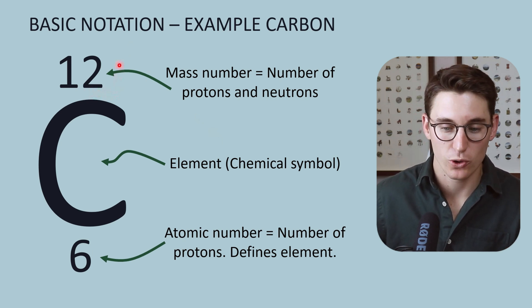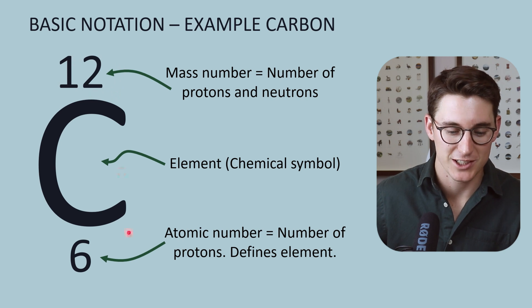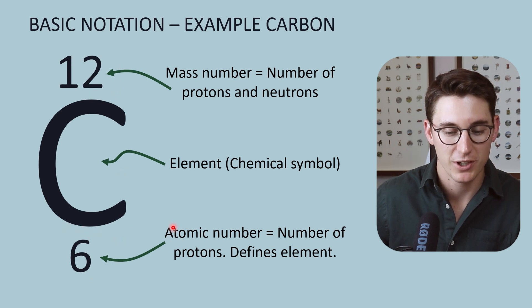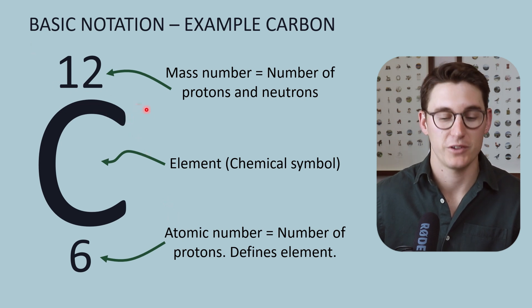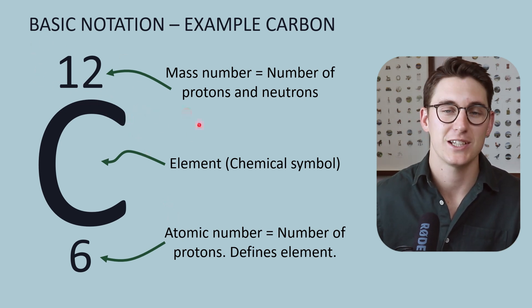If we were to change the total number of neutrons in the nucleus but kept the protons the same, it would still be called carbon, but it would no longer be carbon-12. If we were to add a neutron, it would be called carbon-13.